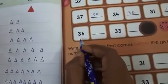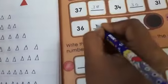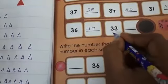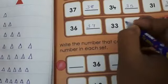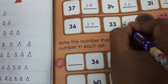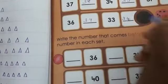3, 6, 36. The next number 3, 7, 37. 3, 3, 33. The next number is 3, 4, 34.